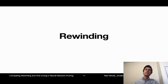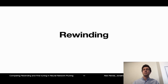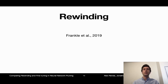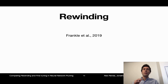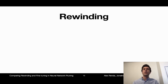We specifically investigate rewinding, which is a recently proposed generalization of the lottery ticket hypothesis by Frankel et al. Rewinding is a technique for finding small subnetworks that can train to the same accuracy as the full network. But in our paper, we investigate rewinding specifically as a retraining technique, comparing it against fine-tuning.